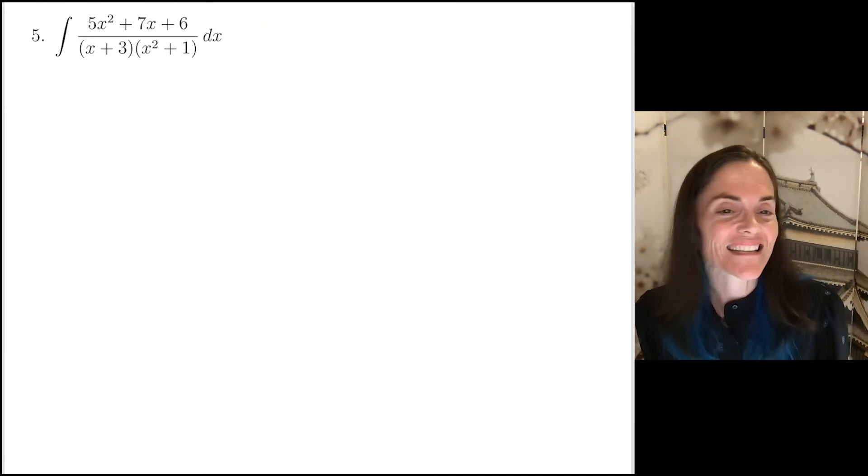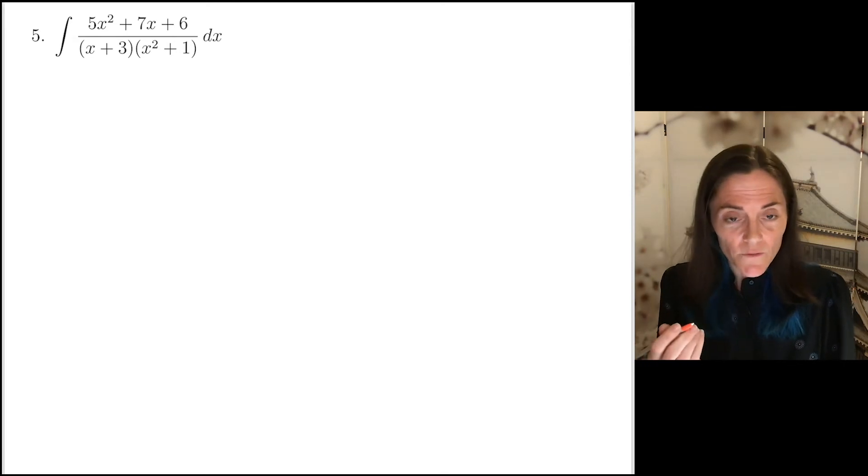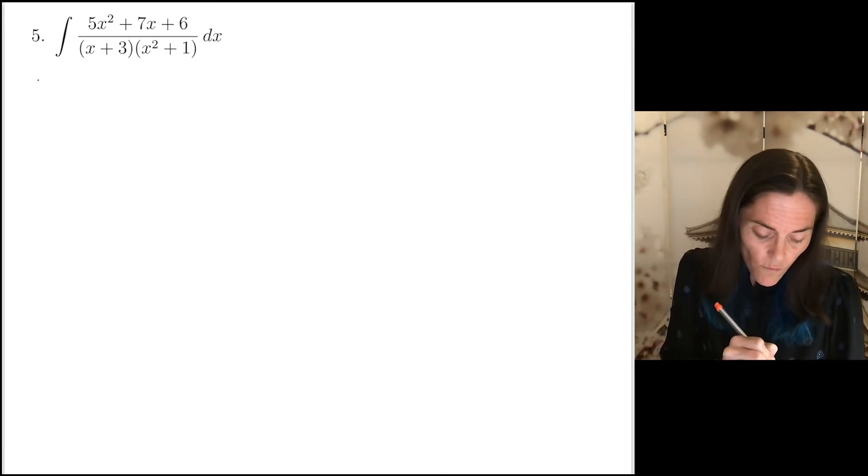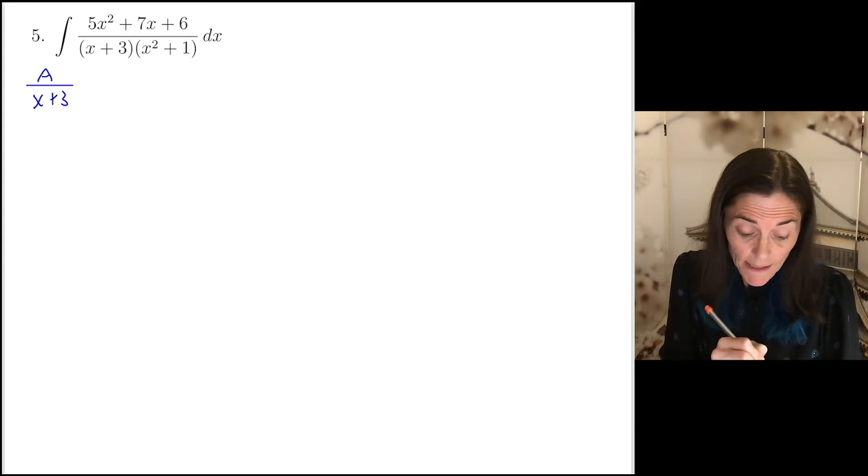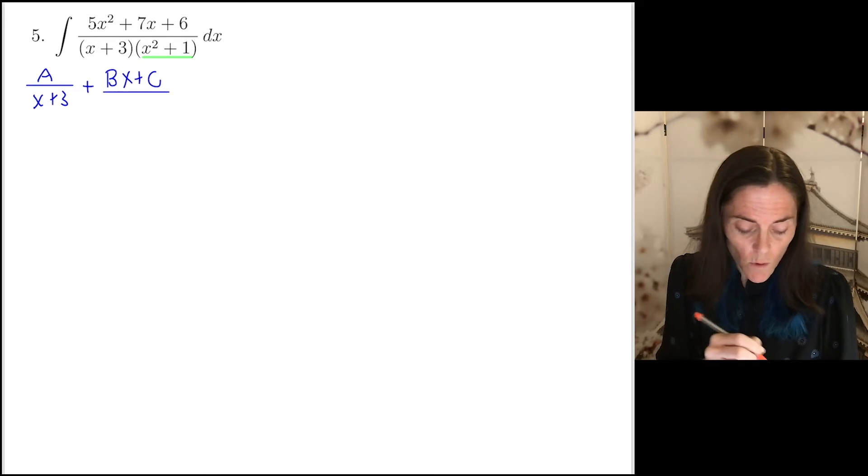Number 5, partial fractions decomposition. This one came off a recent final exam. Some of the others may too, but this one definitely did. So the first thing we want to do in a partial fractions decomposition is figure out the general form. In this case, the general form is a over x plus 3 because we have this one distinct linear term. And then this part, x squared plus 1, this is an irreducible quadratic. So we have bx plus c over this irreducible quadratic. This is our general form. Now, step 2.